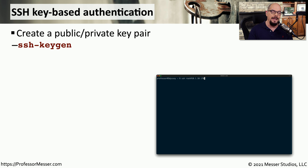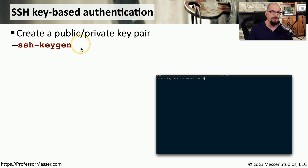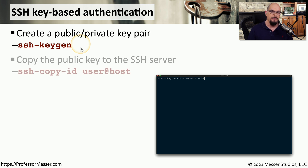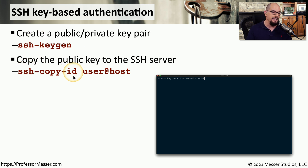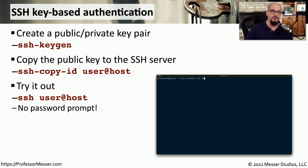If you haven't previously created a public-private key pair, you can do that by running the ssh-keygen command, usually found in Linux or macOS. If you've installed the OpenSSH package or it's already installed in your Linux distribution, then ssh-keygen is probably available on your system. After creating that key pair, you copy the public key to the SSH server using the ssh-copy-id command. Once your public key is deployed to the servers you're connecting to, you simply SSH to the user at host and it logs you in without any password authentication.